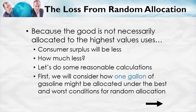Because the good is not necessarily allocated to the highest valued uses with a price control, consumer surplus is going to be less than that maximum amount. To build our intuition, we're going to consider how one gallon of gasoline might be allocated under the best and worst conditions for random allocation. So, we're going to take one gallon of gasoline and allocate it randomly. Suppose we're really lucky — what's the best case for random allocation? And suppose we're really unlucky — what's the worst case for random allocation?